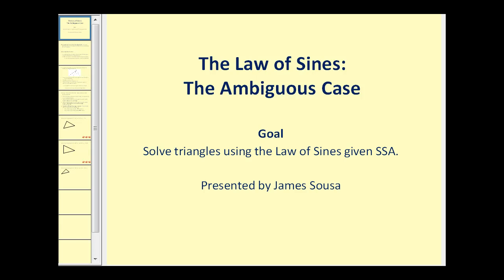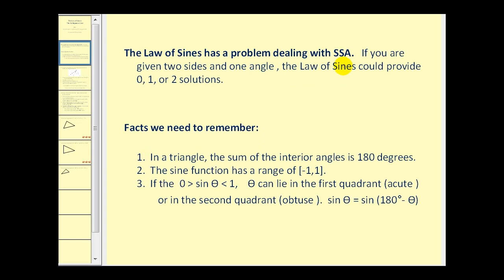Welcome to the second video on the law of sines. This video deals with the ambiguous case, so the goal is to solve triangles using the law of sines given side-side-angle. The law of sines has problems dealing with side-side-angle — if you are given two sides and one angle, the law of sines could provide zero, one, or two solutions.